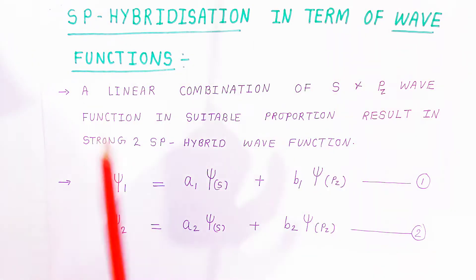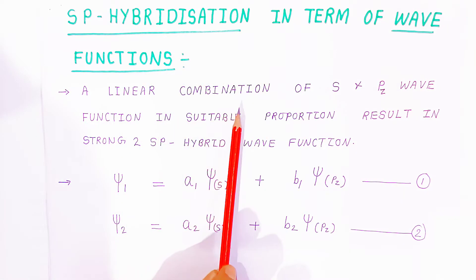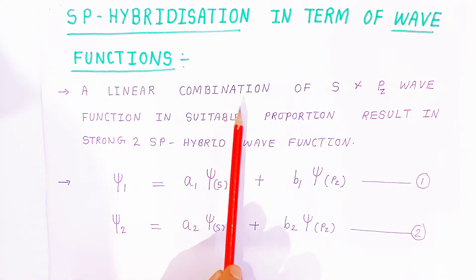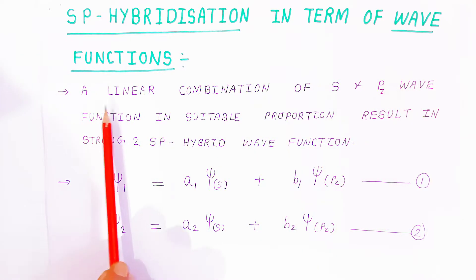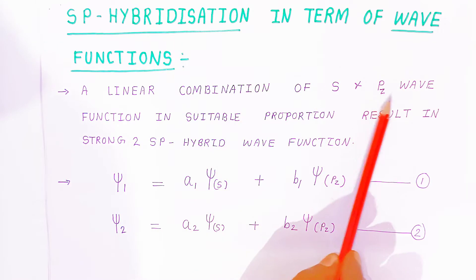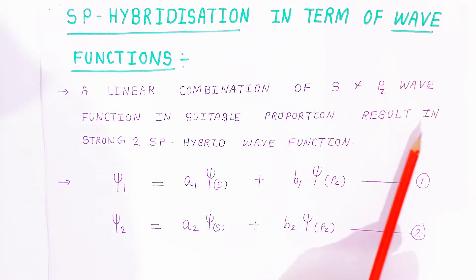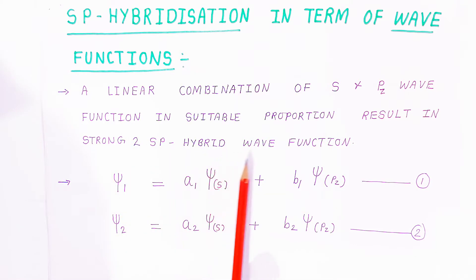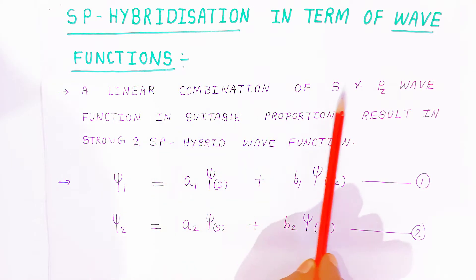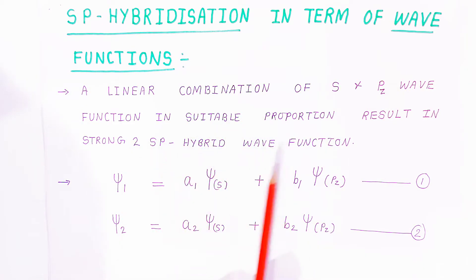The wave function is very important. A linear combination of pure S and PZ wave functions in suitable proportion results in the strong two SP hybrid wave functions. When these two SP wave functions are combined, they will form two SP hybrid wave functions.